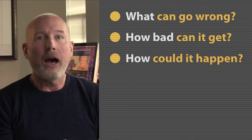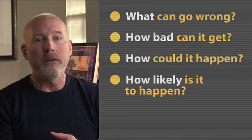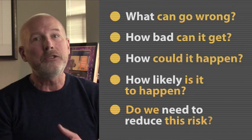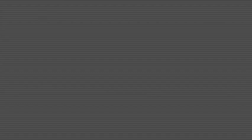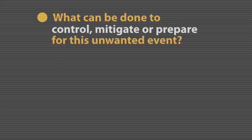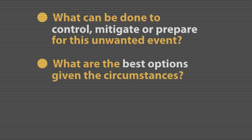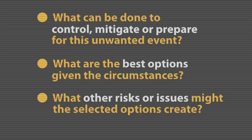Fourth, how likely is it to happen? And fifth, do we need to reduce this risk? Once those questions are answered, you can then move into quality risk management, which asks: what can be done to control, mitigate, or prepare for this unwanted event? What are the best options given the circumstances? And third, what other risks or issues might that selected option create?